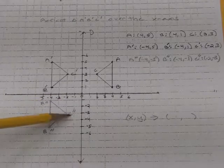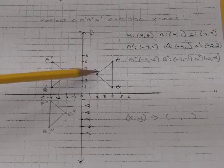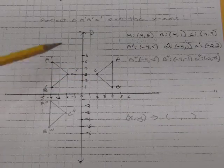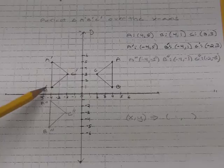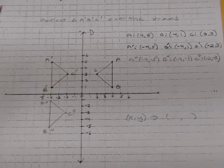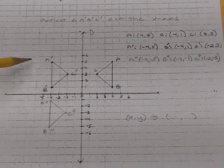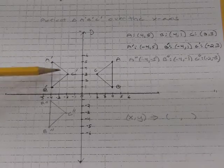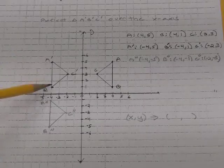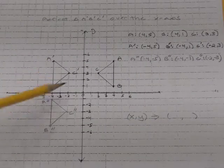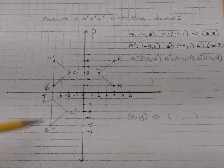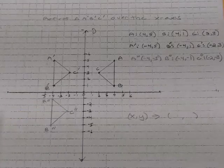Here is A double prime, B double prime, C double prime. Notice that the original figure is still A, B, C. We reflected A, B, C over the Y-axis and got the single prime — that's the first reflection after the original. Then we reflected this new figure over the X-axis. Because those points are named A prime, B prime, C prime, the new reflection is A double prime, B double prime, C double prime.